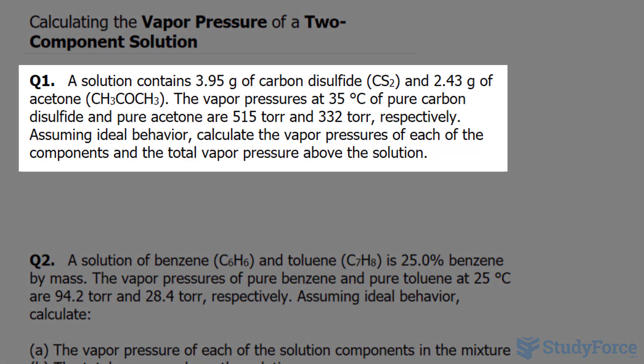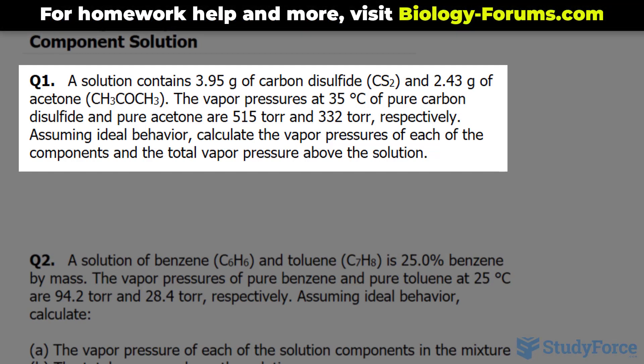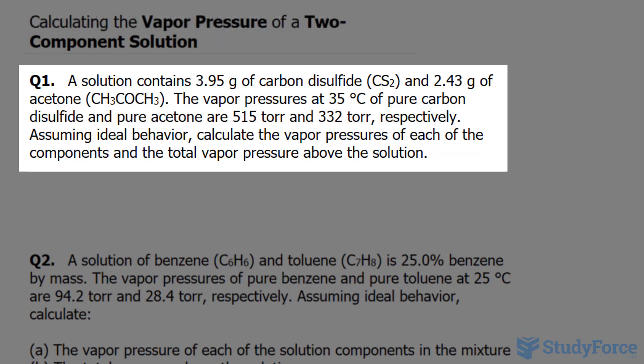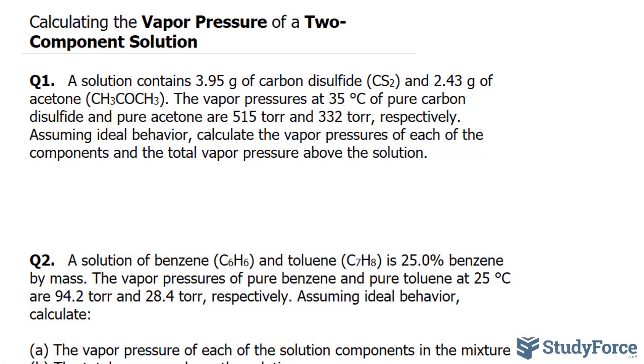Question 1 reads: a solution contains 3.95 grams of carbon disulfide (CS2) and 2.43 grams of acetone. The vapor pressure at 35 degrees Celsius of pure carbon disulfide and pure acetone are 515 torr and 332 torr, respectively. Assuming ideal behavior, calculate the vapor pressures of each of the components and the total vapor pressure above the solution.